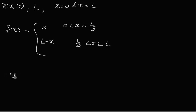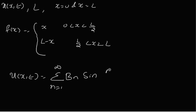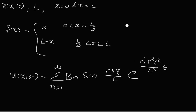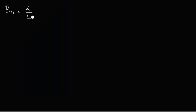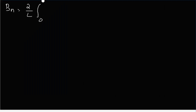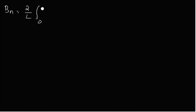The solution is u(x,t) equal to the summation from n=1 to infinity of bn·sin(nπx/L)·e^(−n²π²c²t/L²). The coefficient bn is given by the formula: bn = (2/L)·integral from 0 to L of f(x)·sin(nπx/L) dx.